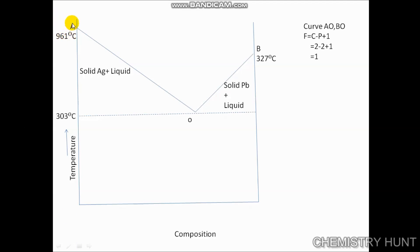Point AO is called the freezing point curve of silver. This curve starts from point A, the melting point of silver, where pure silver coexists as solid and liquid. The vapor is neglected. The curve indicates that the melting point of silver falls gradually on adding lead along AO until the lowest point, 303 degrees Celsius, is reached.